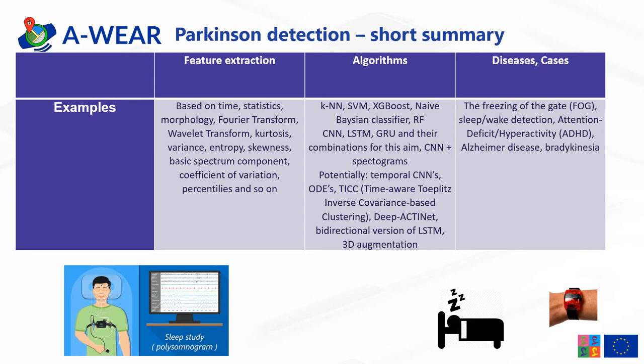The algorithms which have been used so far include KNN, support vector machines, AdaBoost, Naive Bayes classifiers, random forests, as well as neural networks like convolutional networks or LSTM, gated recurrent units, and convolutional networks with spectrograms. Additionally, algorithms that could potentially be applied include ordinary differential equations, time-aware Toeplitz inverse covariance-based clustering, Deep ActiNet, bidirectional LSTM, and 3D augmentation.